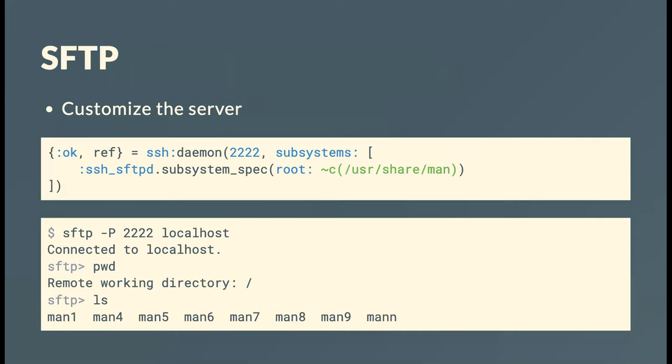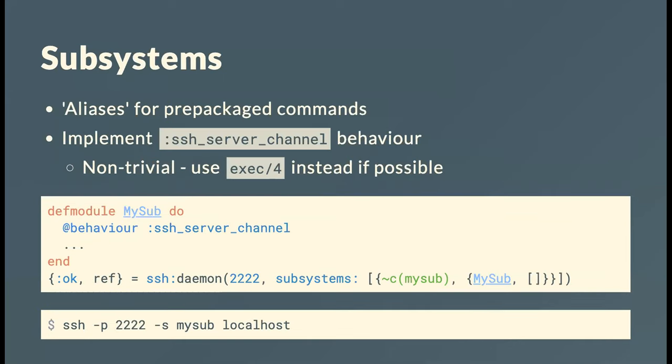The SFTP server setup is a bit similar to a web server in the sense that you can set up an entirely virtual file system. Here, I've said that if someone SFTPs into this Erlang virtual machine, their root is everything below /usr/share/man. But the facilities are there to completely virtualize it — it could be entirely in memory with no physical file system involved at all.